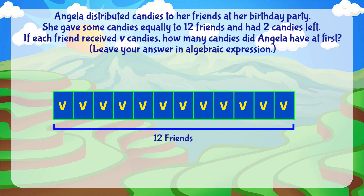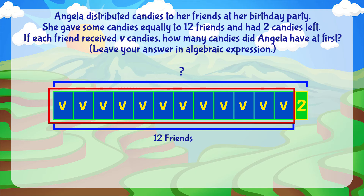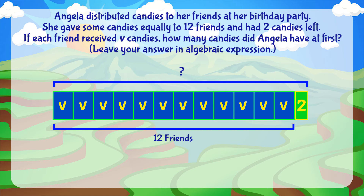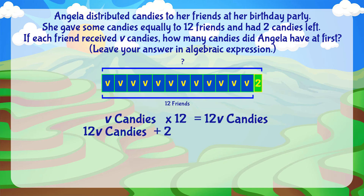Angela had 2 candies left after she gave away candies to her 12 friends. Let's add another rectangle representing 2 candies to the diagram. Look closely at the diagram — can you see that we can add all parts to find the whole? To find the total amount of candies Angela had at first, we can add up the number of candies Angela gave away and the number of candies left. V candies multiplied by 12 equals 12V candies. 12V candies plus 2 candies equals 12V plus 2 candies.